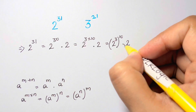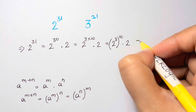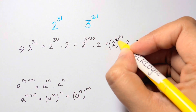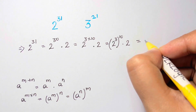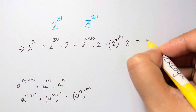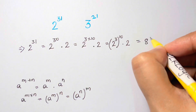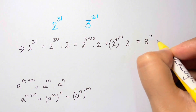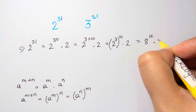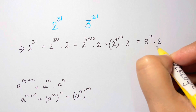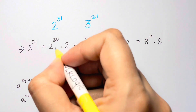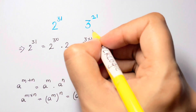So I'm going to write it as 2 cubed, whole to the power of 10, times 2. Now 2 cubed equals 8, so I have 8 to the power of 10 times 2. Now let's solve for the second part.